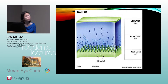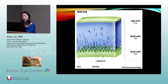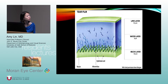The tear film is composed of three main layers: the lipid layer produced by the meibomian glands, the aqueous layer produced by the main and accessory lacrimal glands, and the bottom mucin layer produced by goblet cells. The mucin layer is responsible for sticking the tear film to the ocular surface.